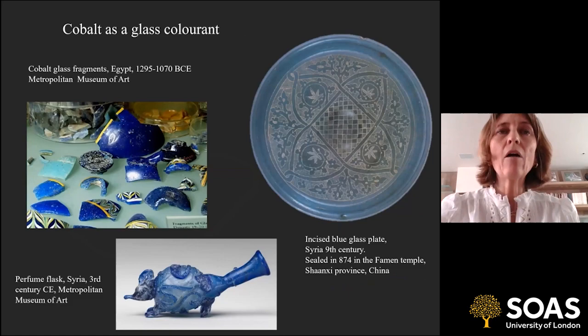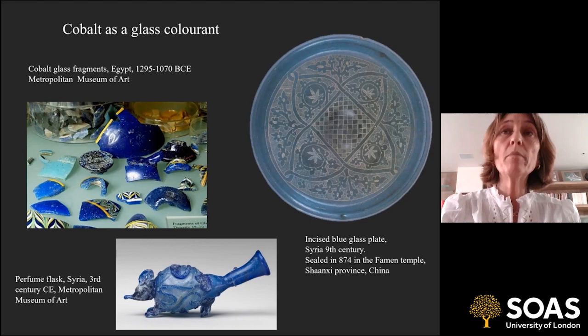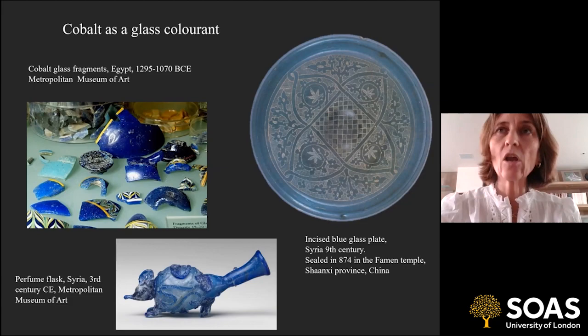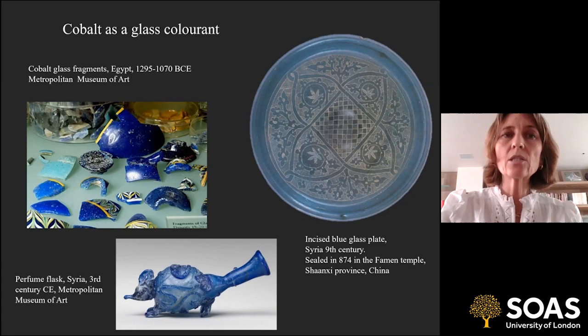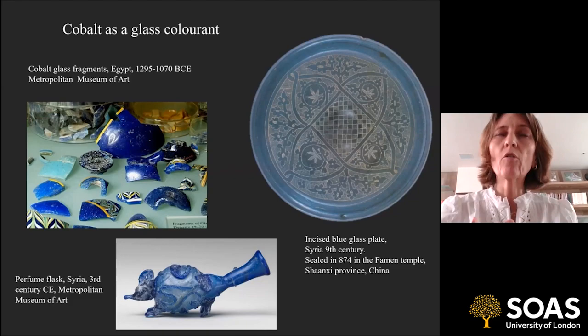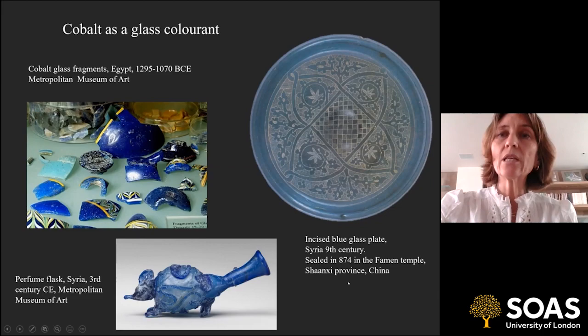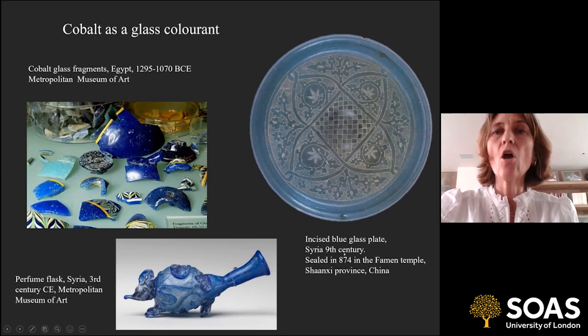Cobalt was a mineral that was around — we know of mines in the Persian mountains near Kashan. It was used widely in glass through the Roman period, including this nice little mouth-shaped perfume flask in cobalt glass. The craftsmen working after the Islamic conquest carried on using cobalt. This plate is a good example of the period — it was actually given as a gift to somebody in China, and was sealed, giving us a terminus post quem of 874, as it's in the treasury of the Faman Temple in China.